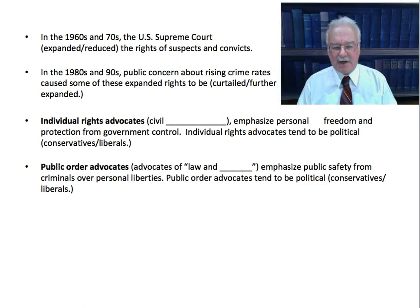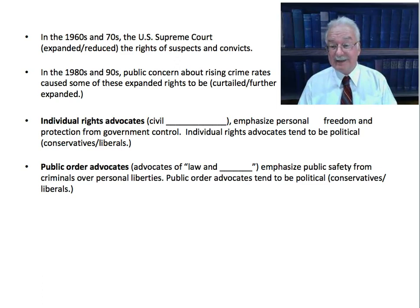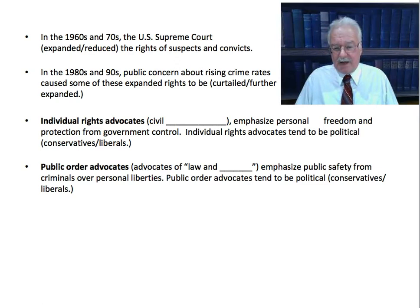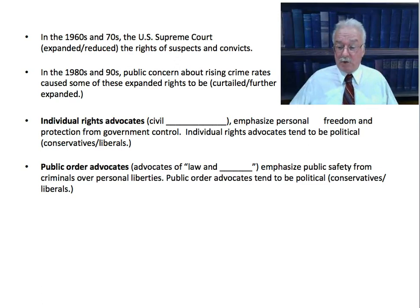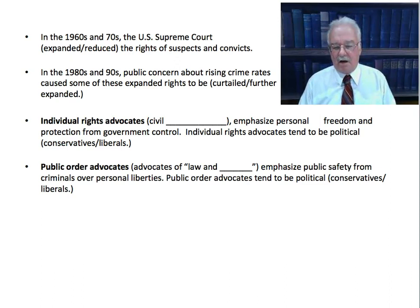There are two types of people: individual rights advocates and public order advocates. Individual rights advocates — sometimes called civil libertarians — emphasize personal freedom and protection from government control. They want to maximize your freedom, opposing laws that unnecessarily restrict what you can do, and they're very suspicious of law enforcement and government prosecutorial power. Individual rights advocates tend to be political liberals — the American Civil Liberties Union is an example of a civil liberties group.